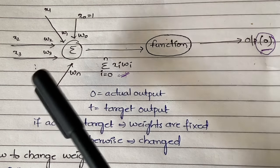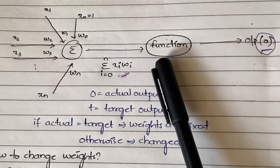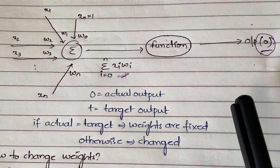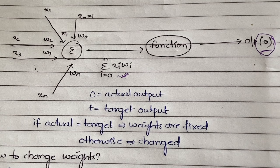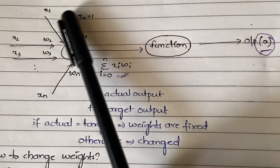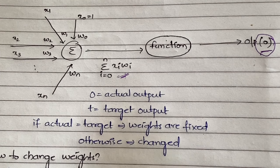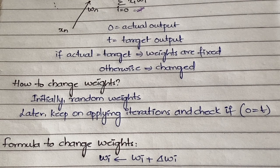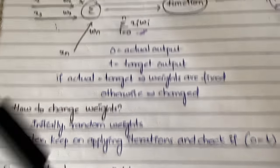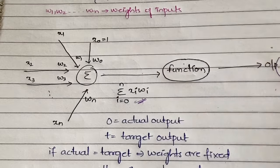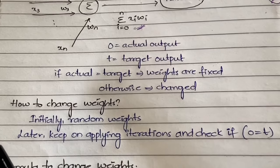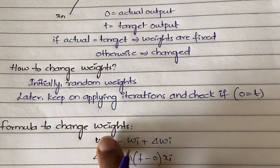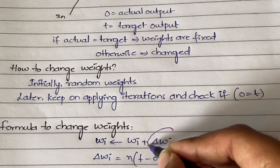To be clear: the summation function generates the linear combination of inputs, which is sent to the activation function, and the activation function generates the actual output. That actual output is compared with the target output. If both are equal, the initial weights are fixed. If not, we change the weights. First, pick some random initial weights, perform the summation and activation steps, then check: if outputs are not equal, use the update formula.